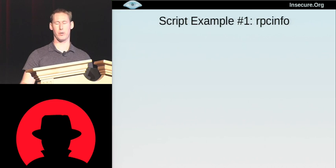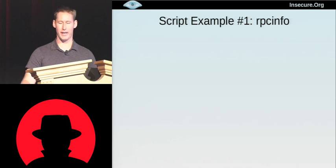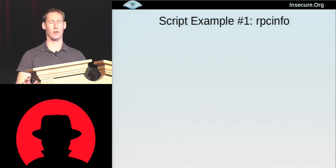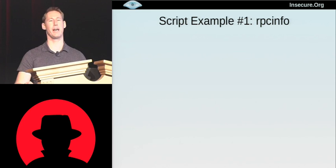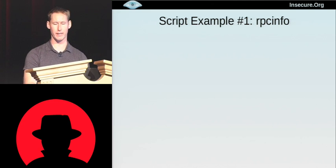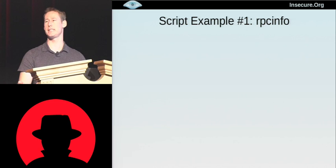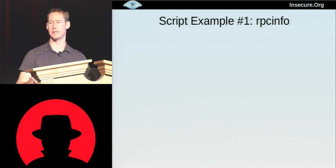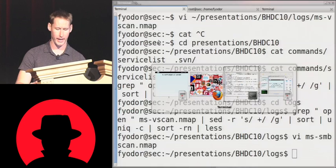Now is a good time to get concrete and actually look at the source code for an NSE script. The one we're going to look at is called RPCinfo, and it basically does what the name implies. People who've been doing pen tests for a long time have become accustomed to seeing port 111 RPC bind open on a system, then in another window doing 'rpcinfo -p targetname' to get the list of RPC ports, services, and port numbers. Wouldn't it be nice if Nmap, when it detects that port open, could automatically do that and place the results right next to port 111 so you have everything together and convenient?